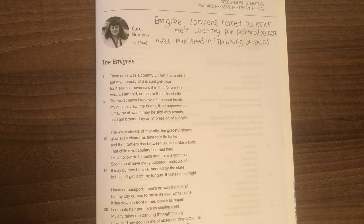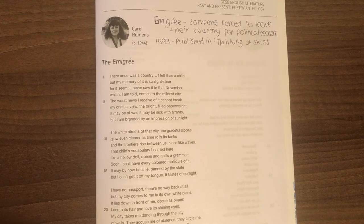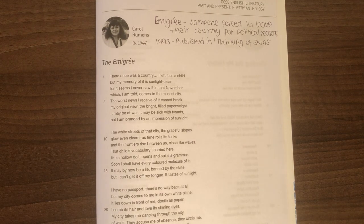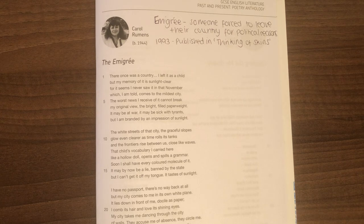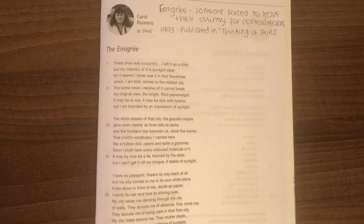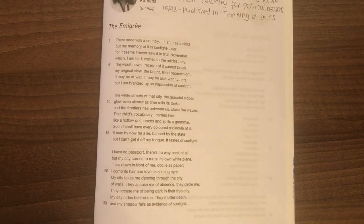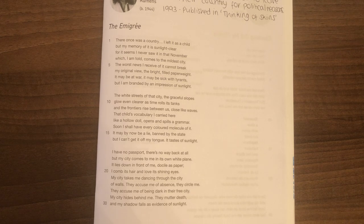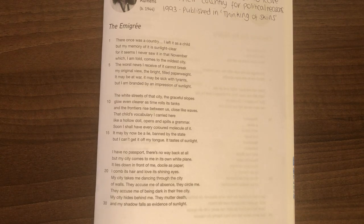I have no passport, there's no way back at all, but my city comes to me in its own white plain. It lies down in front of me, docile as paper. I comb its hair and love its shining eyes. My city takes me dancing through the city of walls. They accuse me of absence. They circle me. They accuse me of being dark in their free city. My city hides behind me. They mutter death and my shadow falls as evidence of sunlight.